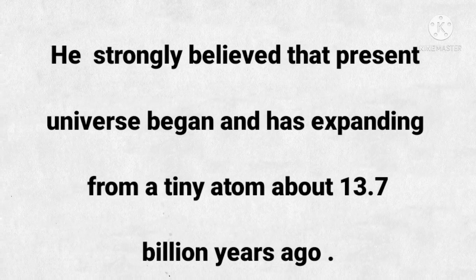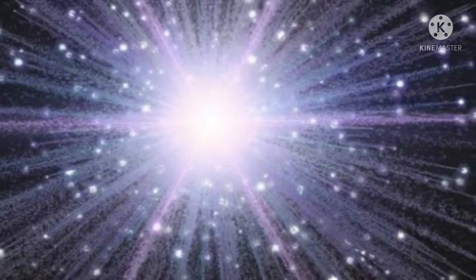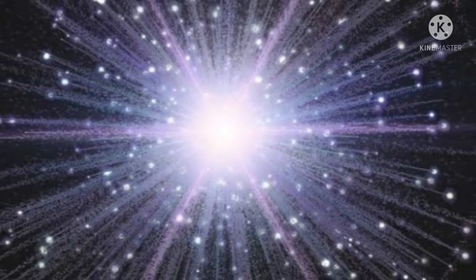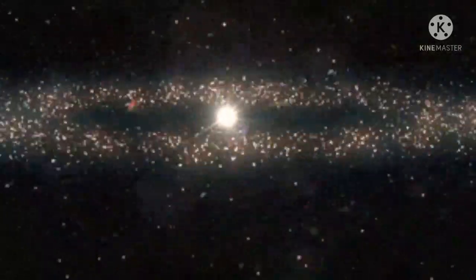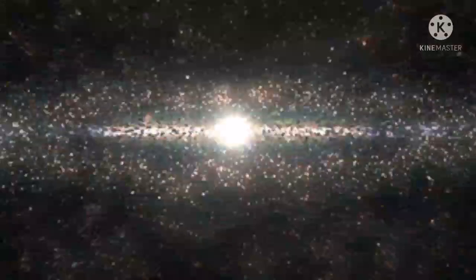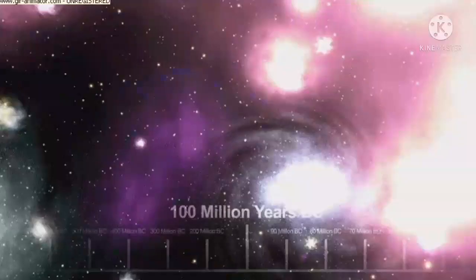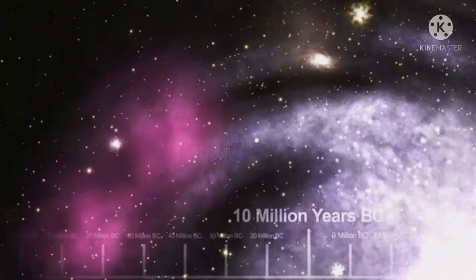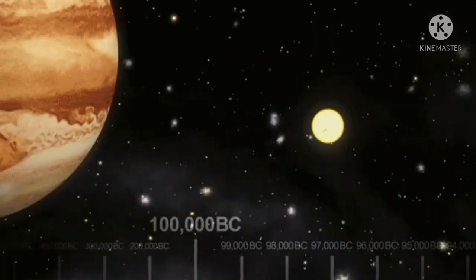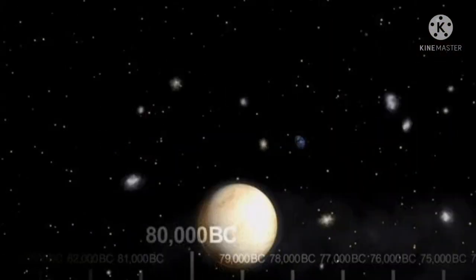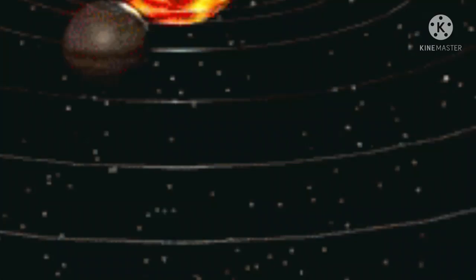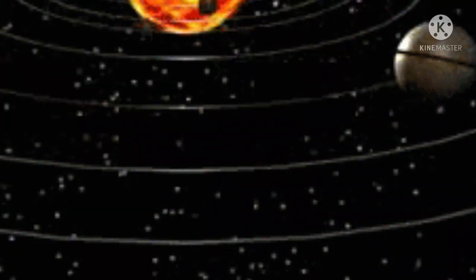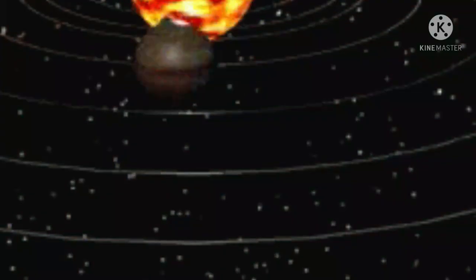That tiny atom was like a small ball with infinite temperature and infinite density. Over time, stars, galaxies, planets, satellites, and all other celestial objects were formed in the universe.